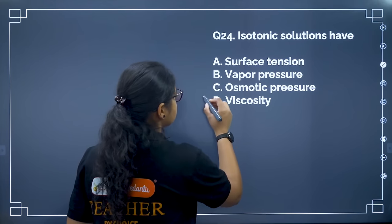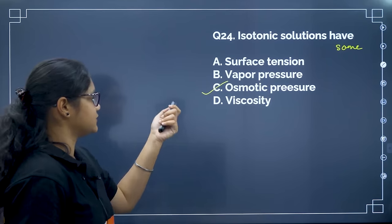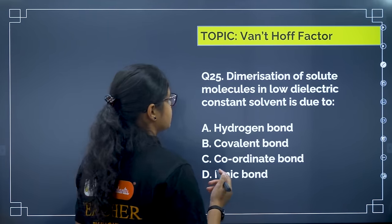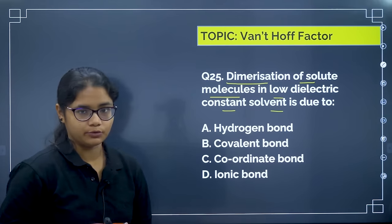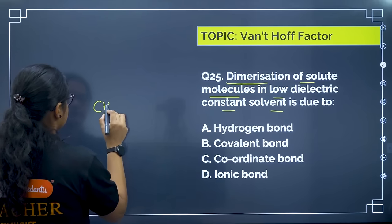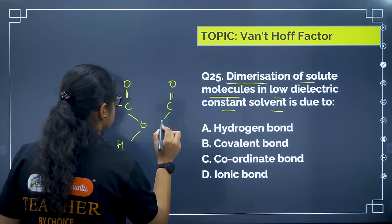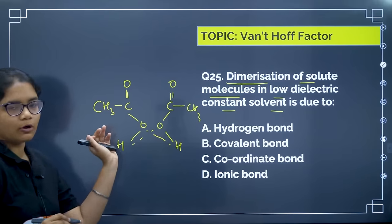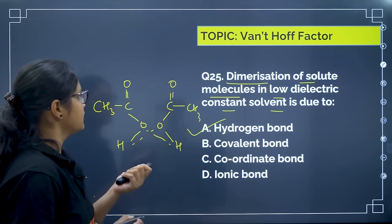Isotonic solutions have the same osmotic pressure — correct answer option C. Next: dimerization of solute molecules in low dielectric constant solvents is due to — example: acetic acid in benzene dimerizes through hydrogen bonding between the OH groups. Dimerization mainly occurs due to hydrogen bonding. Correct answer is option A.